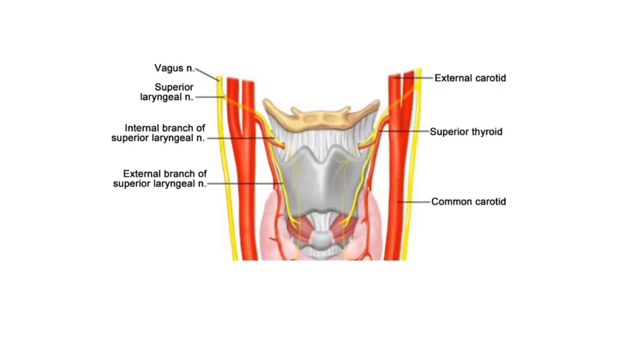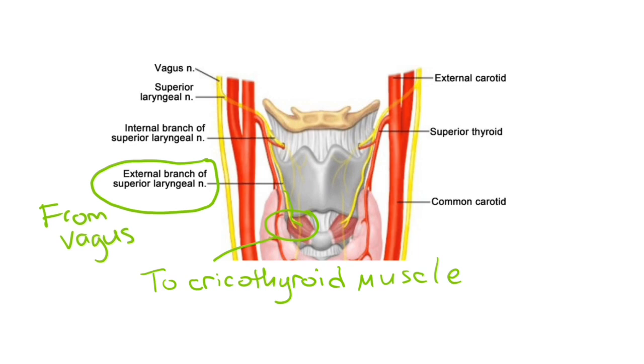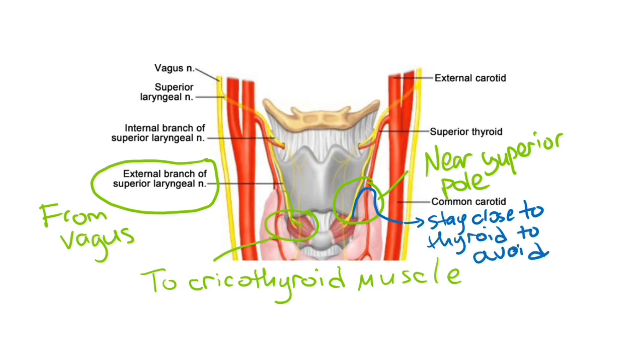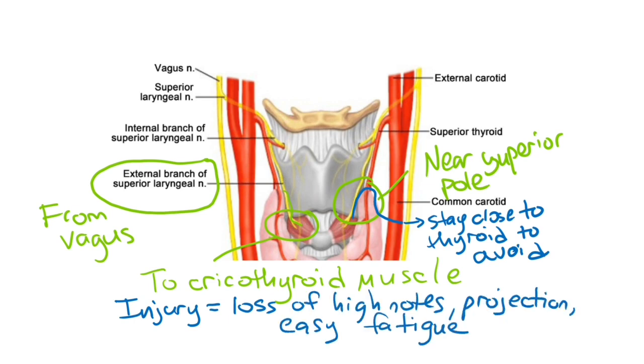The other nerve you need to know is the external branch of the superior laryngeal nerve which is also a branch off the vagus that innervates the cricothyroid muscle. The external branch of the superior laryngeal nerve runs near the superior pole vessels and is at risk during takedown of the superior pole. Stay close to the thyroid to avoid injury. Injury to this nerve leads to loss of hitting the high notes, loss of voice projection, and easy voice fatigue.